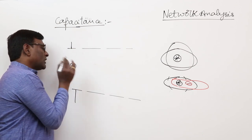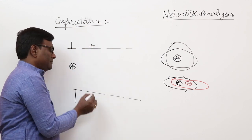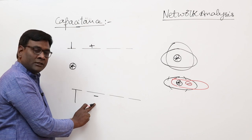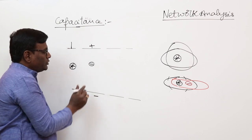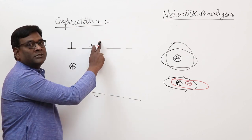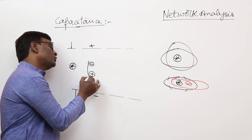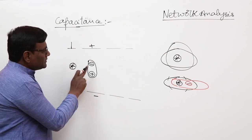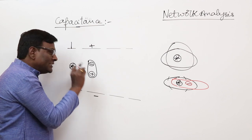In a capacitor, the positive center of gravity and negative center of gravity should lie at the same point under no applied field. But if I apply a positive charge on one side and negative on the other, the positive will experience repulsion from one side and attraction from the other, and similarly for the negative — so negative will shift up and positive will shift down. Two equal and opposite charges displaced by a small distance is called an electric dipole.